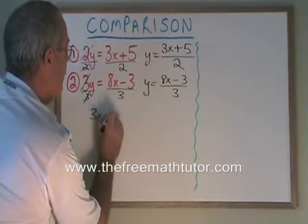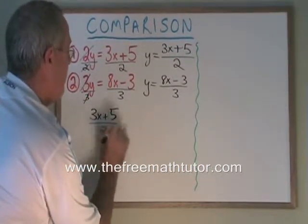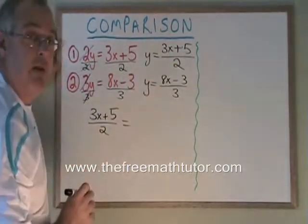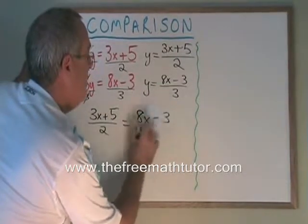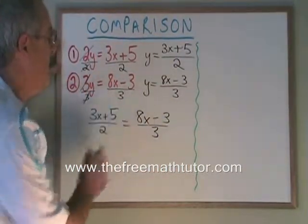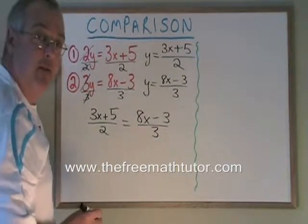3x plus 5 over 2, and making it equal to what y is equal to in the other equation, 8x minus 3 over 3. Now, we have a single equation with only x's and we can solve for x.